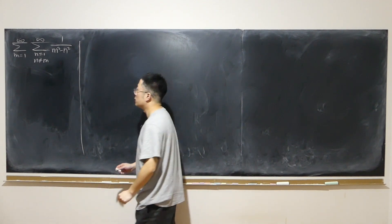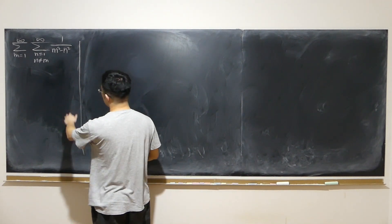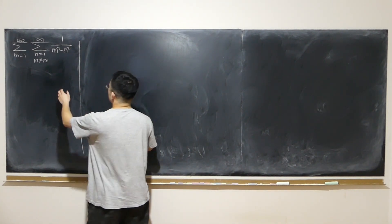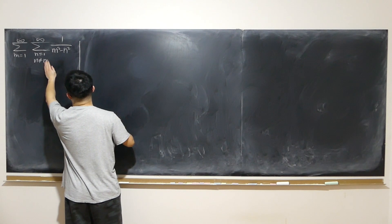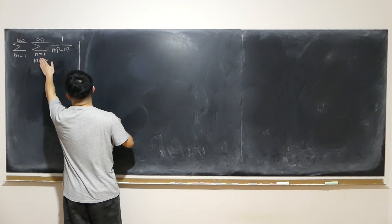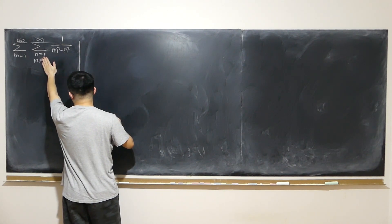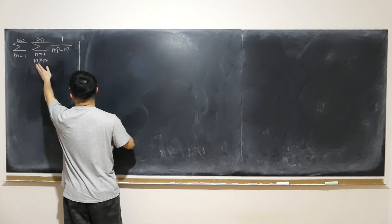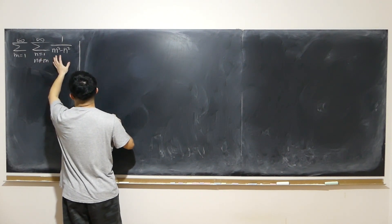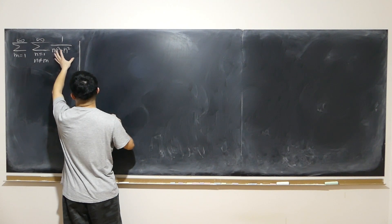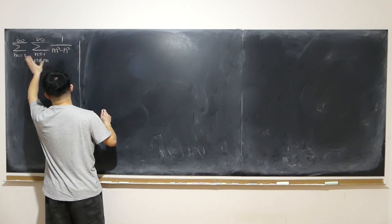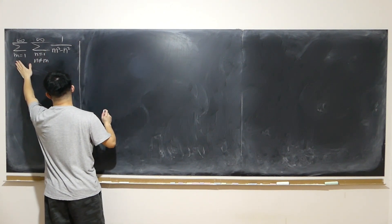Let's look at this double infinite sum. First, we hold m constant and let n go from 1 to infinity, with n not equal to m, to make it meaningful. Then we let m go from 1 to infinity.